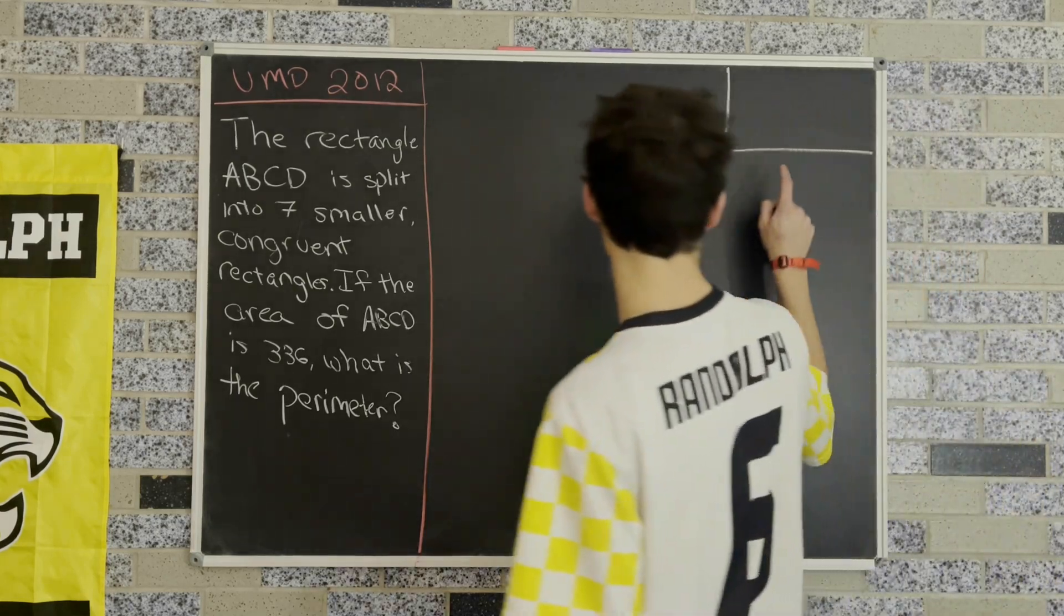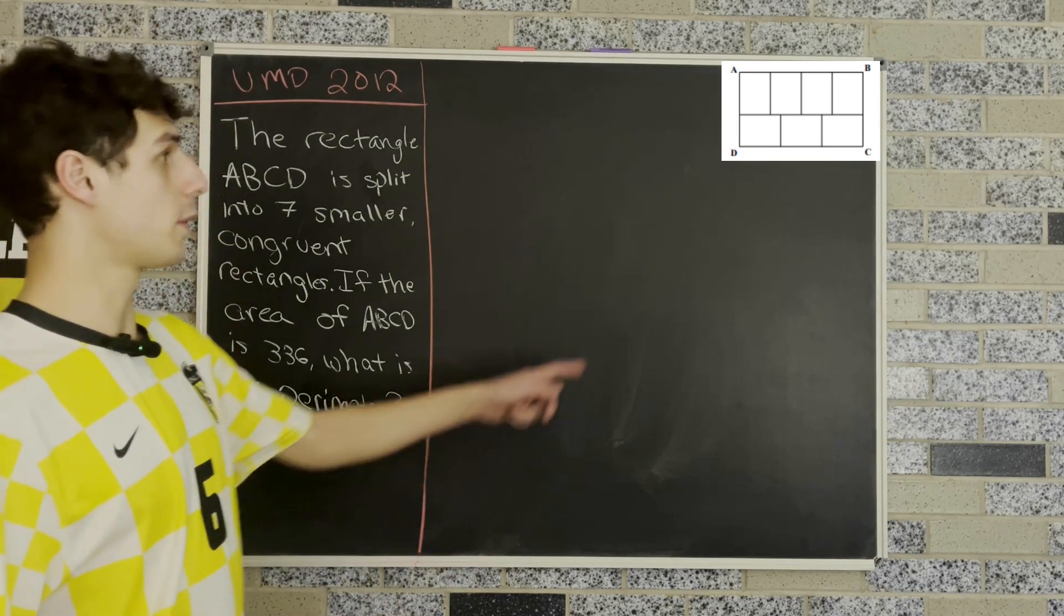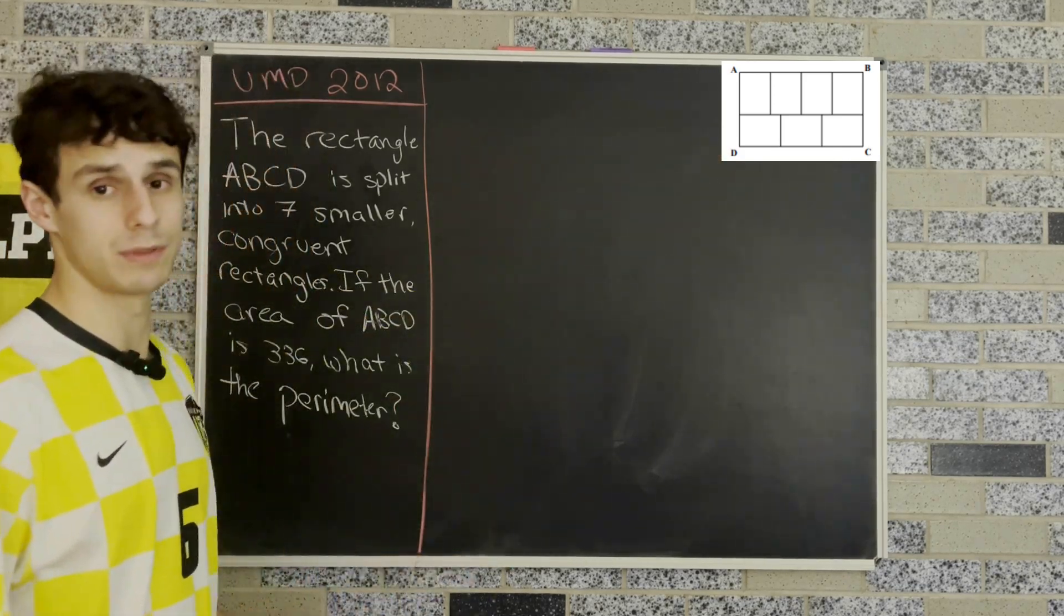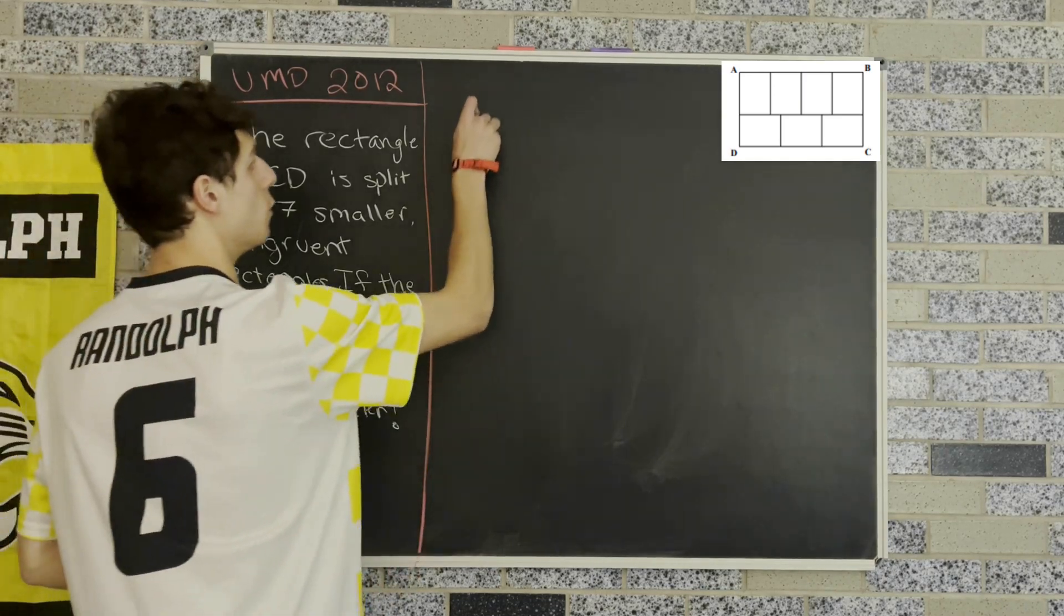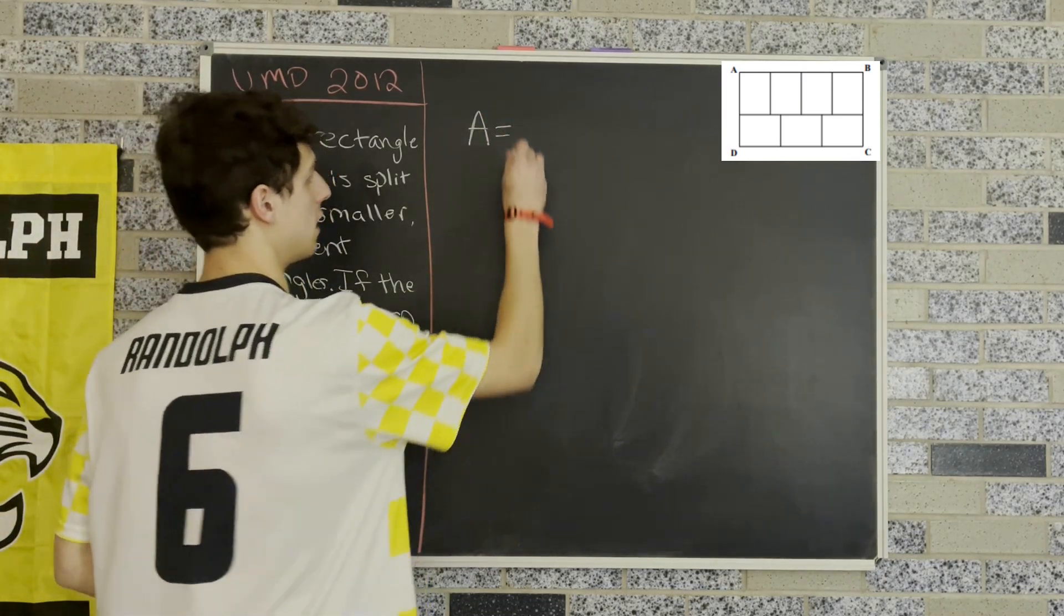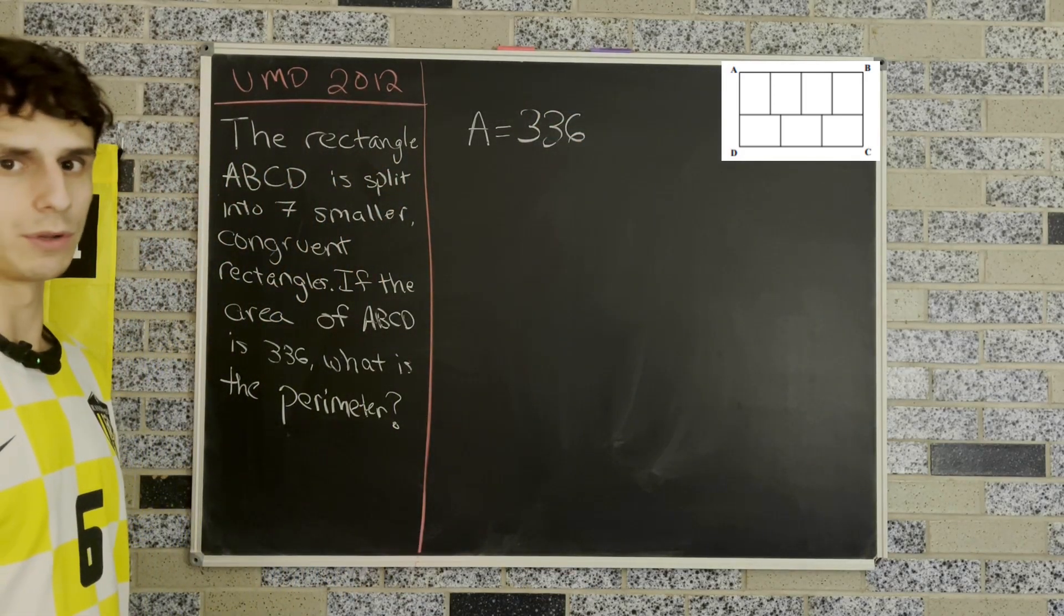I'm going to put a picture of the rectangle here because I don't want to draw it out. It's a lot of congruent rectangles. So I'll put the picture from the competition up in that corner. We'll start on our solution. First, we know that the area of this rectangle is 336, and our goal is to find the perimeter.